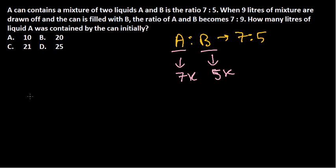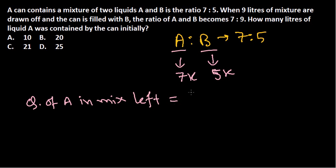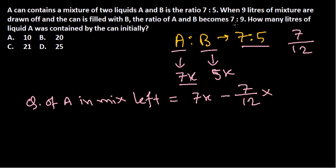Now let's look at the quantity of A left in the mixture after 9 liters are drawn off. Since the ratio of A and B is 7:5, the total is 12 parts. So 7 out of 12 parts is liquid A. The quantity of A left in the mixture is 7x minus (7/12) × 9 liters drawn out.